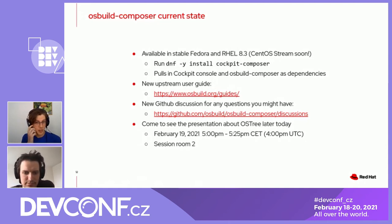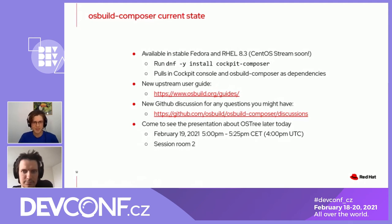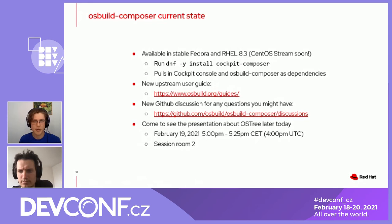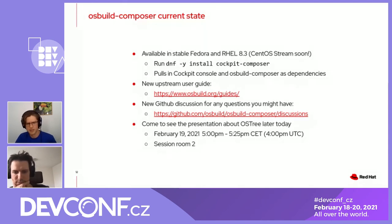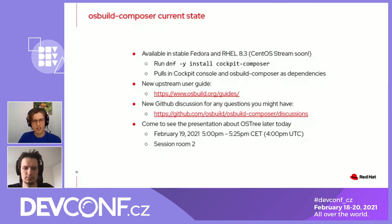Open the Cockpit console and you can build your first image right there. We have a new upstream guide which is very informative — it has details about what you can do in blueprints and how to upload images. It was updated about a month ago, so it's pretty up-to-date.